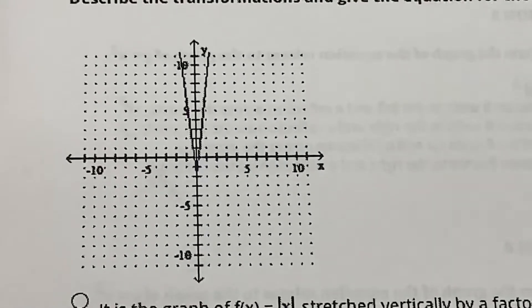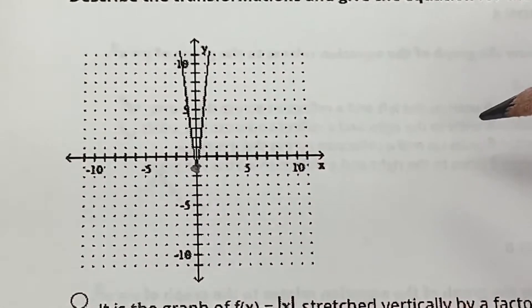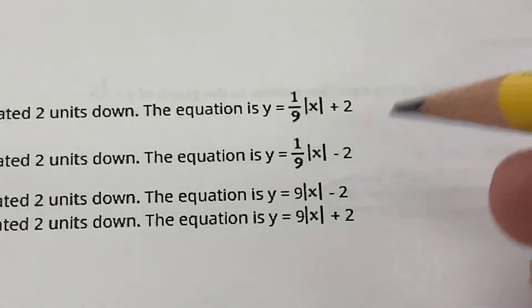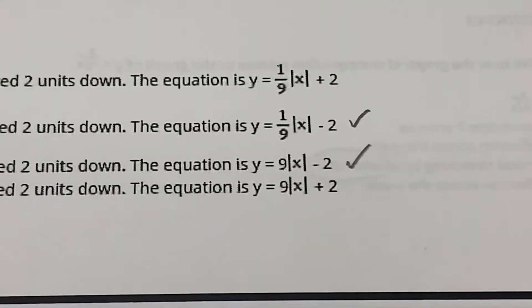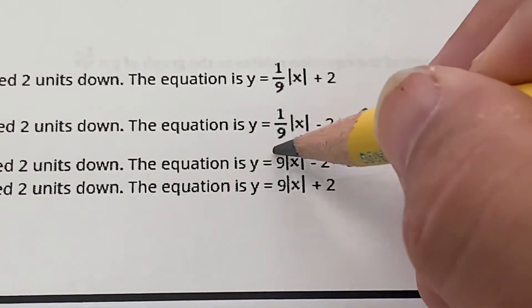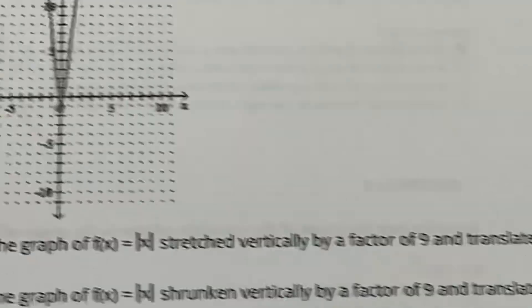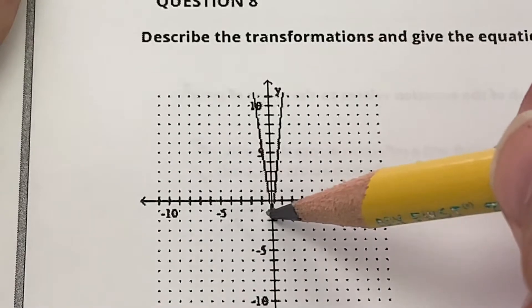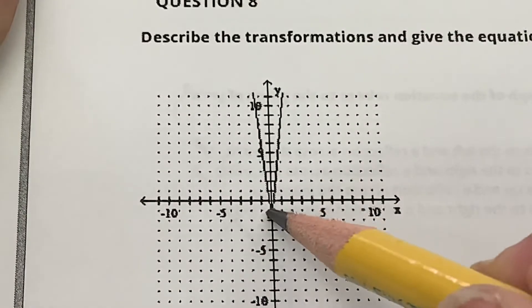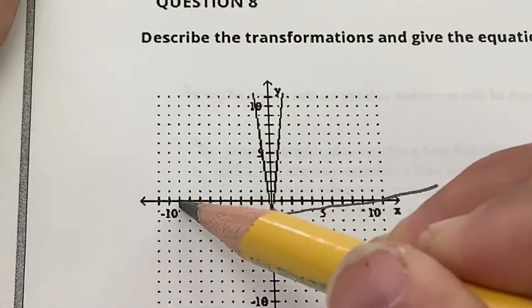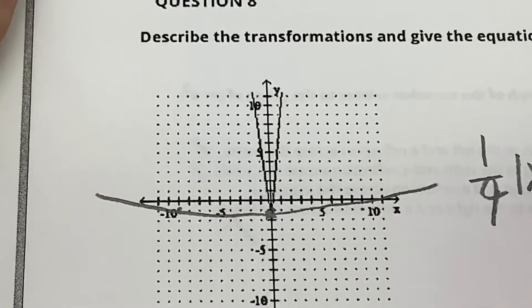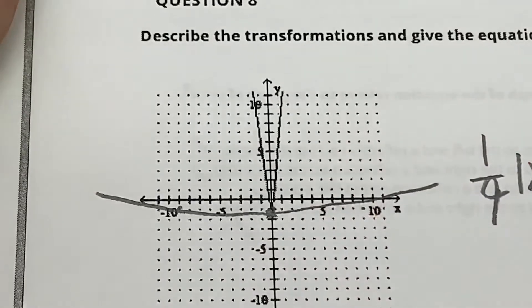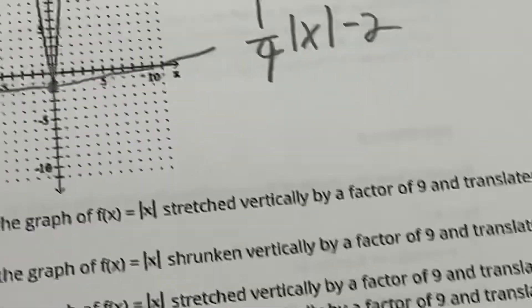This is an absolute value graph with a narrow shape — it's tough to see. It looks like it was shifted down two. It's either one of two options, and since it's very narrow, it's the one with the 9 in front. If it were one-ninth, it would be a wide 'fat bottom' shape — up 1, right 9, very wide. But since it's narrow, it's got the 9 in front.